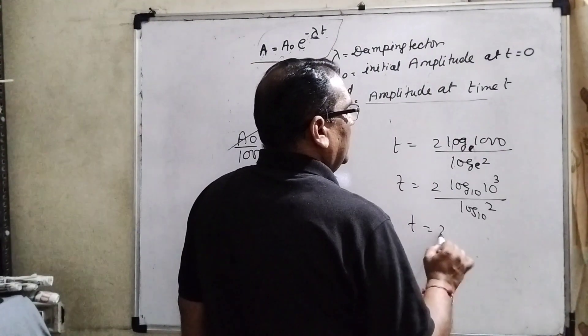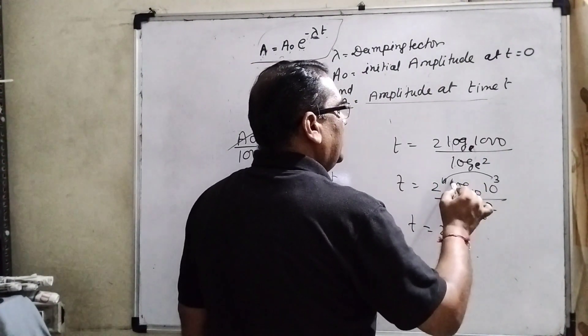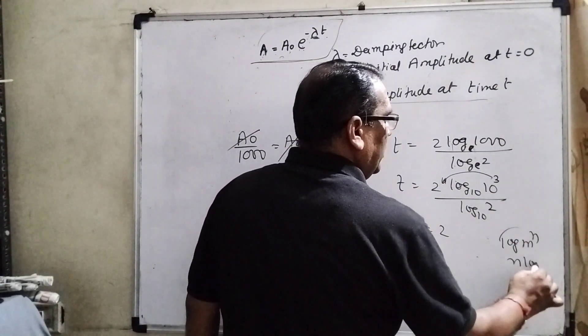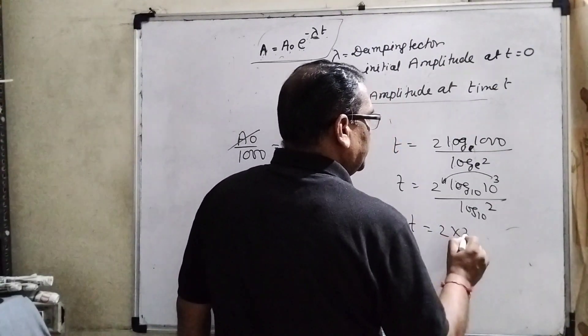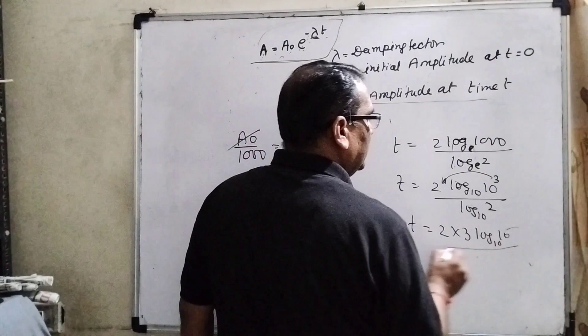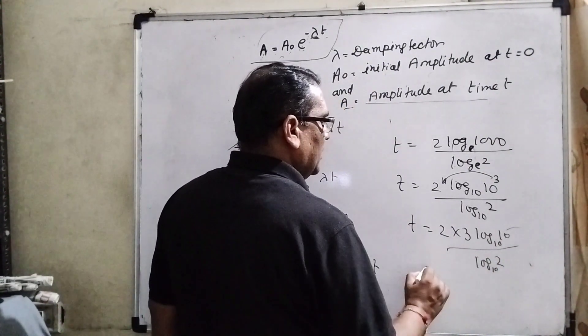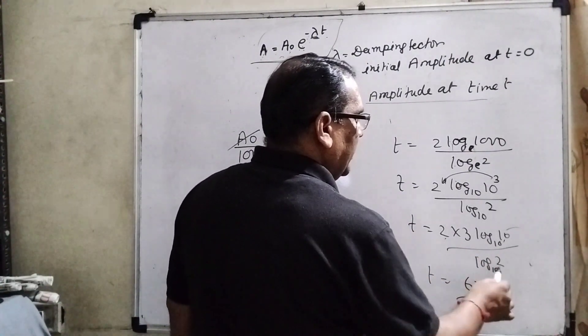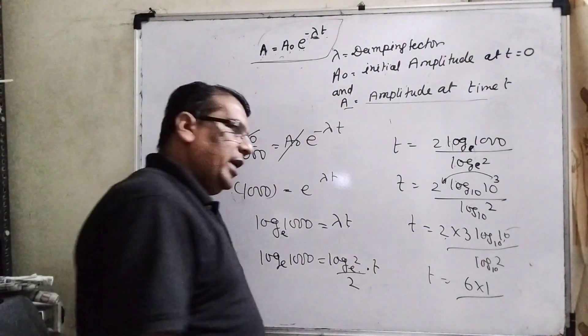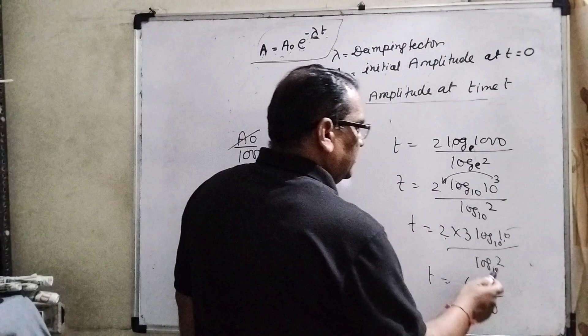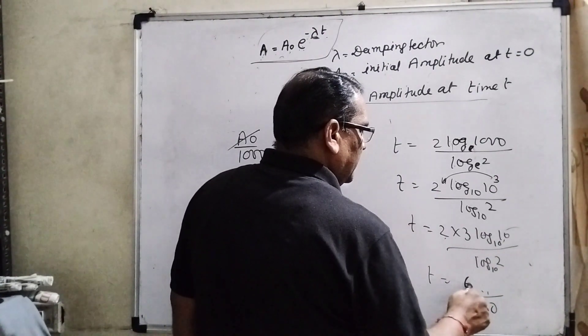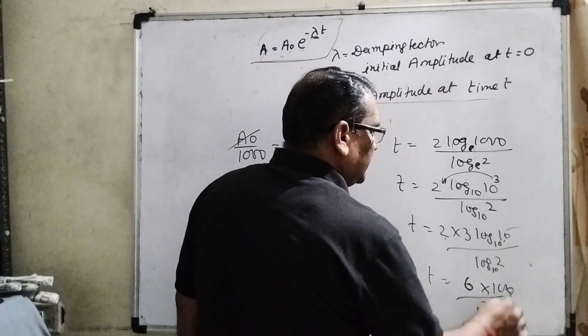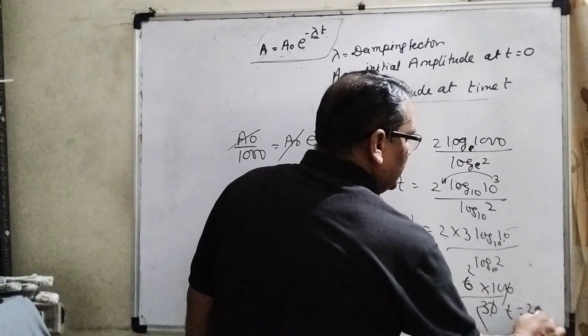So here 3 comes to the forward of the log, because property of log: m raised to power n, then n log m. So it can be written as 2 into 3 log 10, and now log 2 to the base 10. Here t equals 2, through the 6 log 10 is 1, and log 2 is 0.3010, and approximately it can be written as 0.303. Decimal remove and 100 multiplied. 3 to the 6, means t equals 20 seconds.